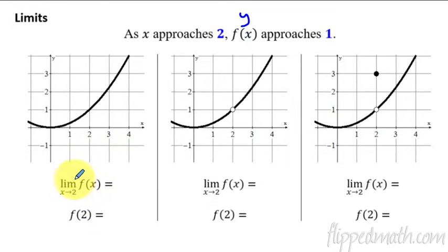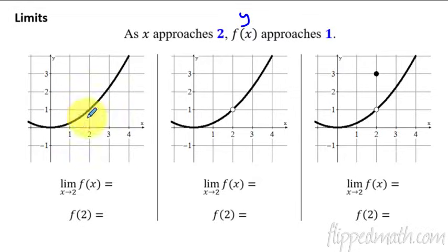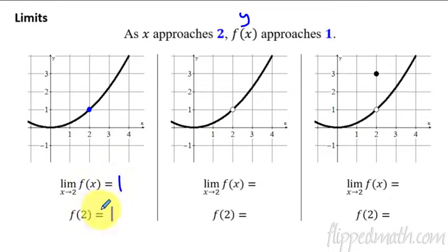Let's look at the first example. This is the notation for how you write a limit: the limit as x approaches 2 of the function f is equal to... what we're doing is looking at the number 2. As we approach 2, what value does the function approach? The y value is 1. For this first example, we're also asking what is f of 2 — what is the y value when x equals 2. The y value is also 1. So sometimes the limit is the same as the y value of the function, but sometimes it's not.